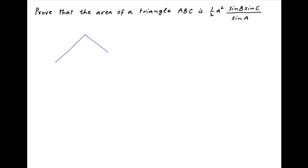Let's start by drawing triangle ABC. The three vertices are capital A, capital B, and capital C. The sides opposite these vertices are small a, small b, and small c respectively.